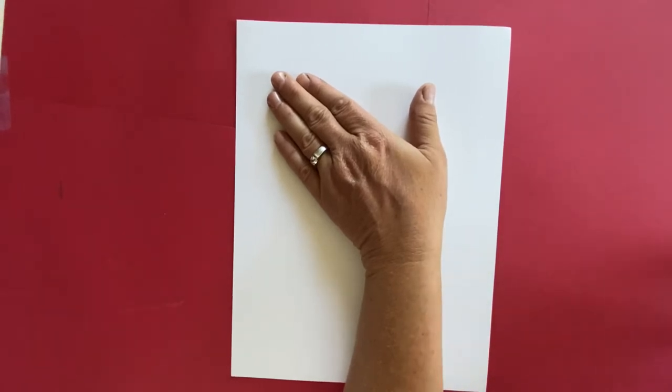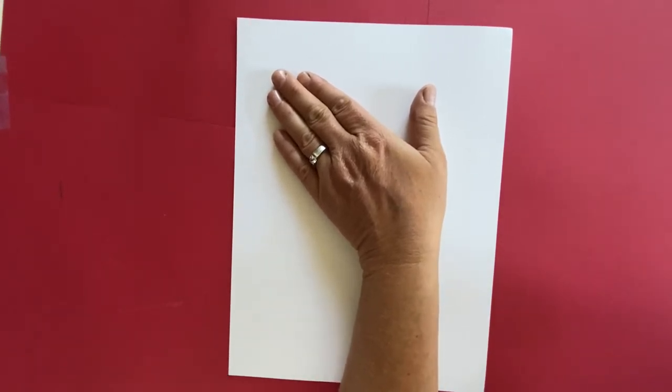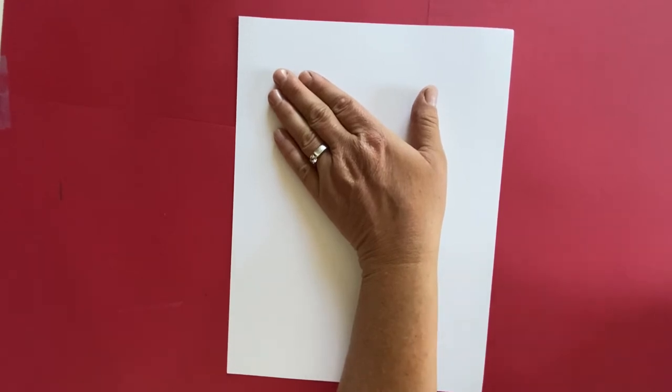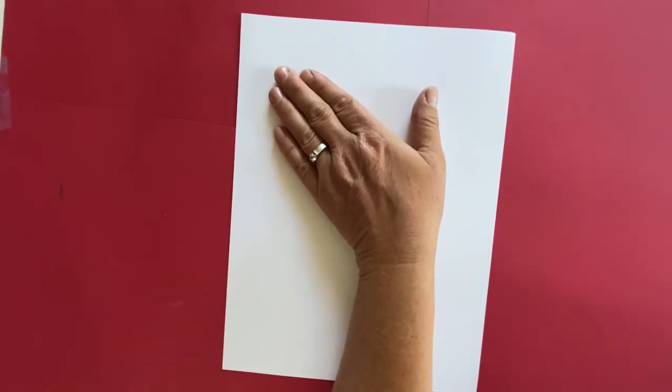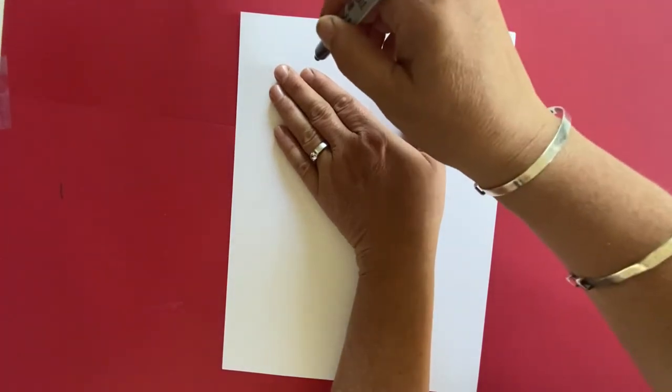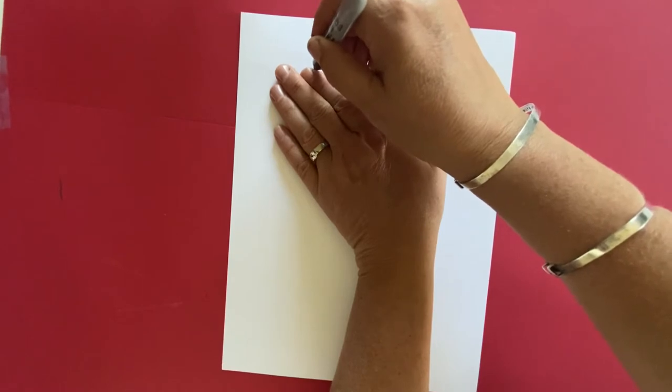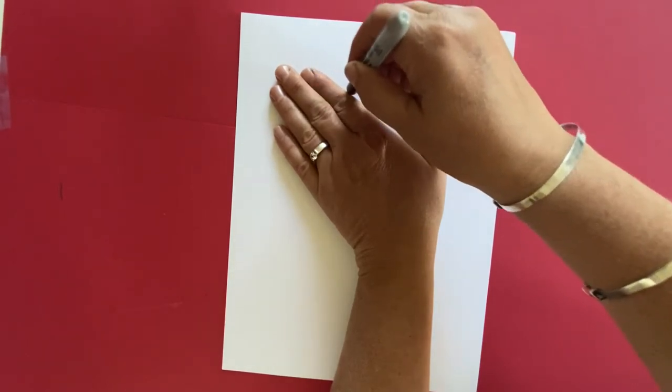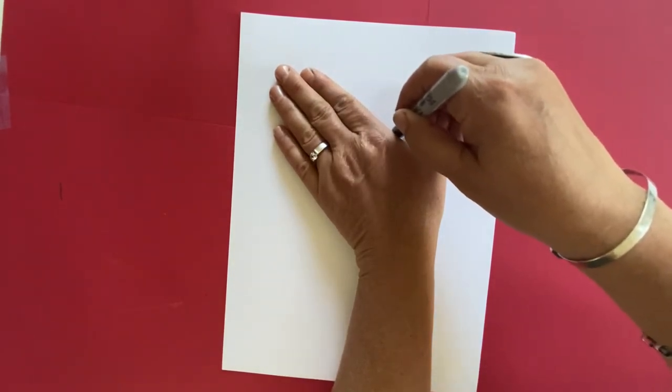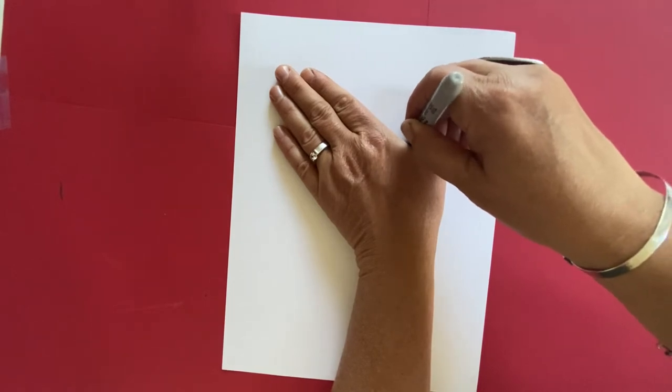So I'm using a black sharpie so you can see, but you are going to use a pencil. Take your time. Go very slowly. Now if your teacher decides that she wants to use just a copy of the outline or the contour line, you will have one in front of you. Otherwise, you will be doing this step with Miss A.